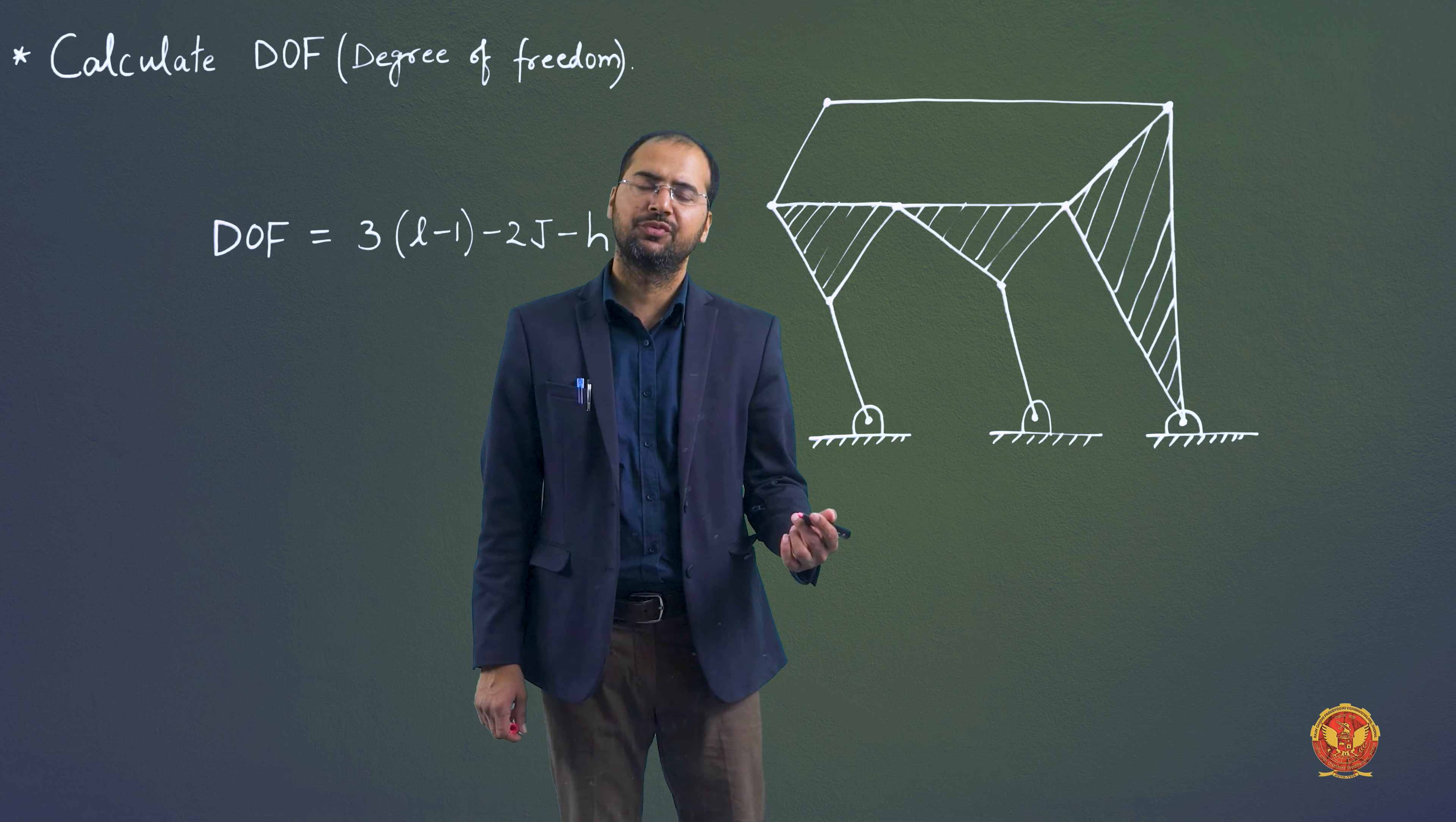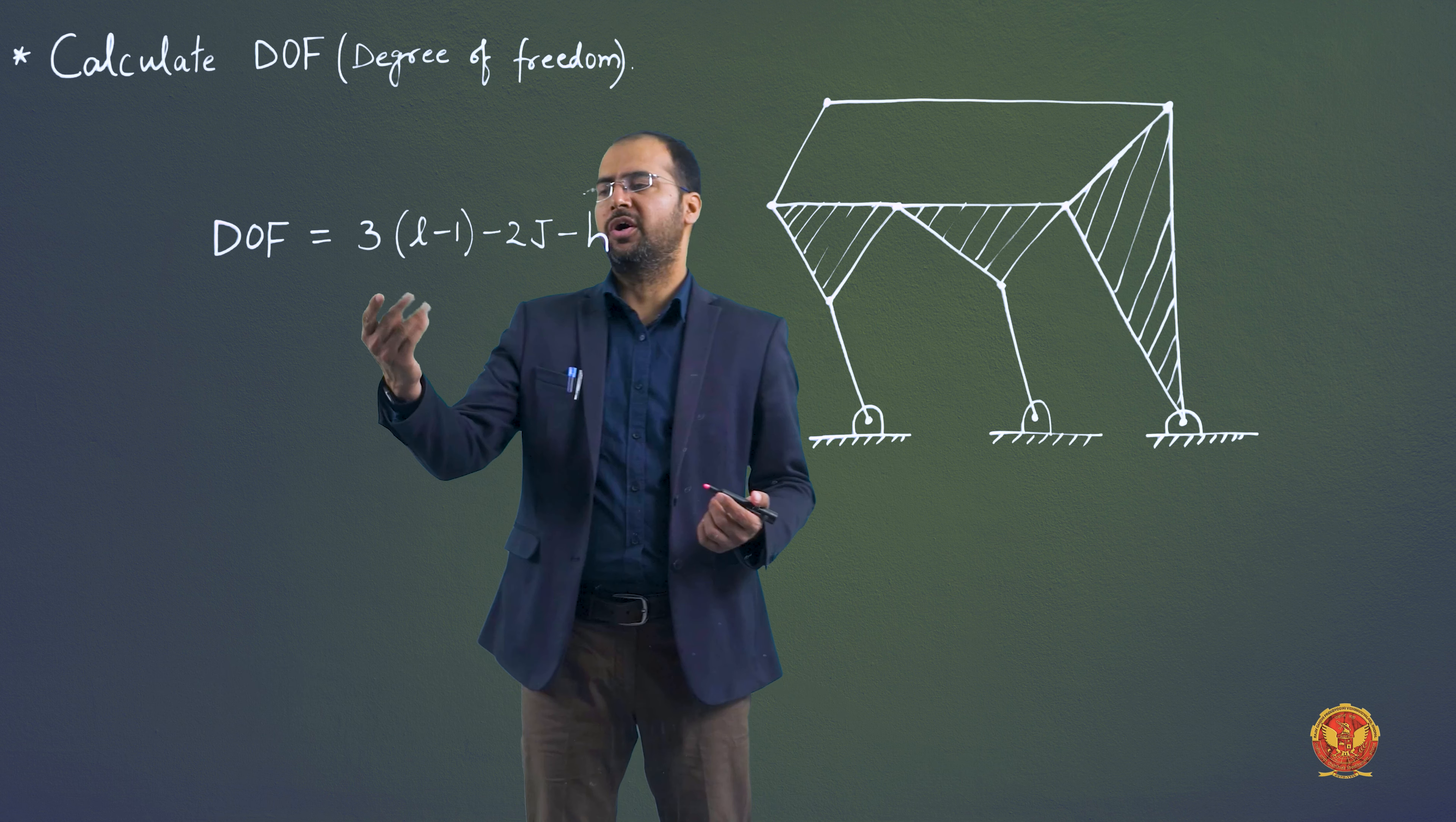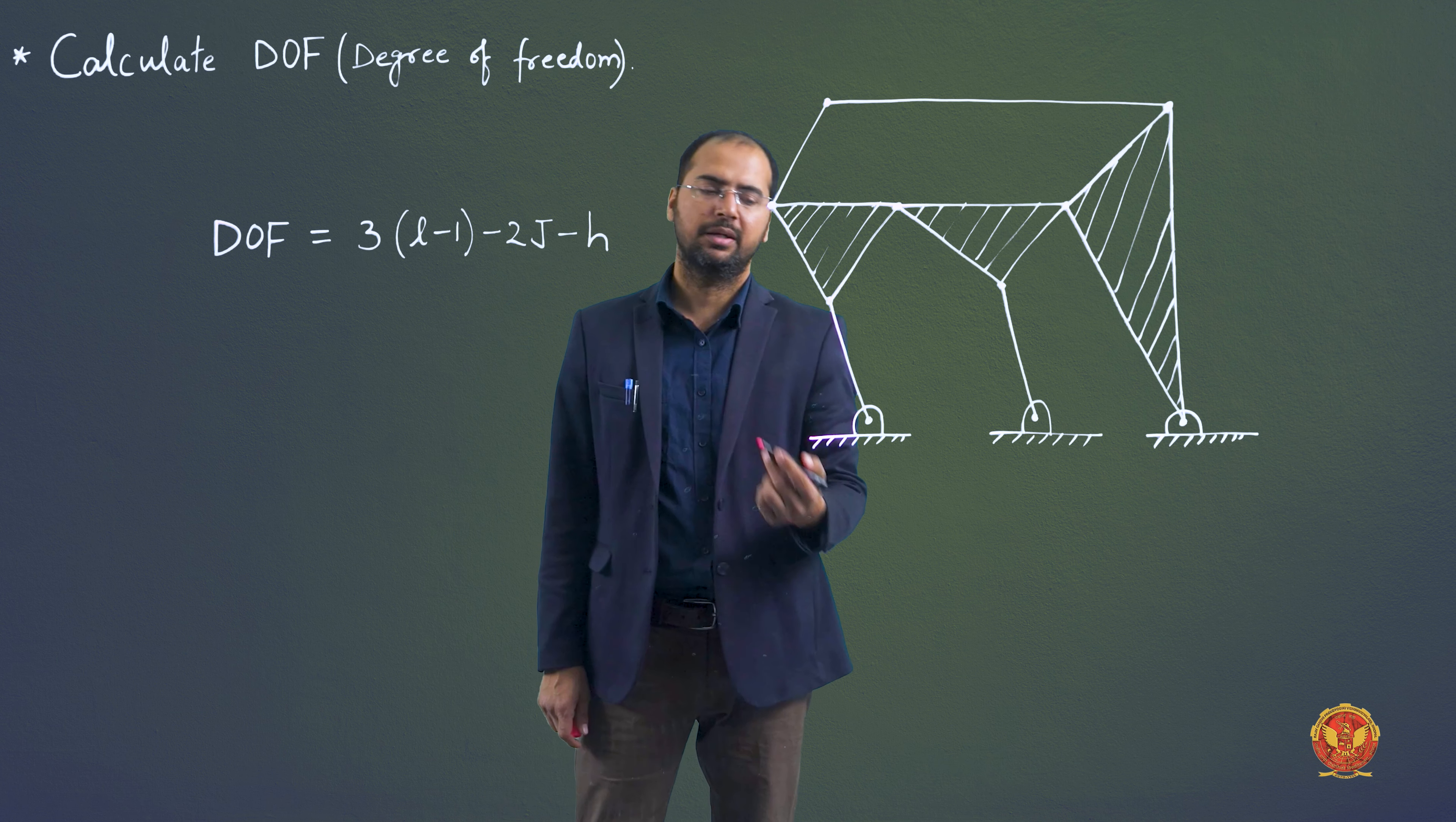Hello students, in today's class we are going to calculate the degree of freedom of this given mechanism. The first degree of freedom to find out, we have a formula: degree of freedom is equal to 3 into l minus 1 minus 2j minus h, where l is the number of links, j is the number of binary joints, and h is the number of higher pairs.